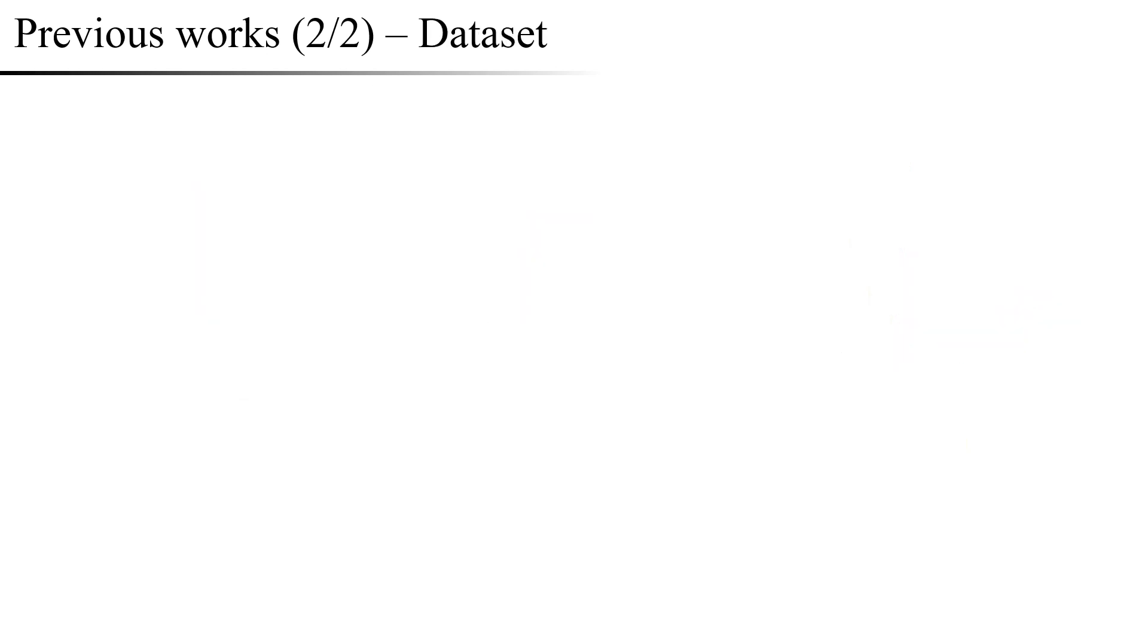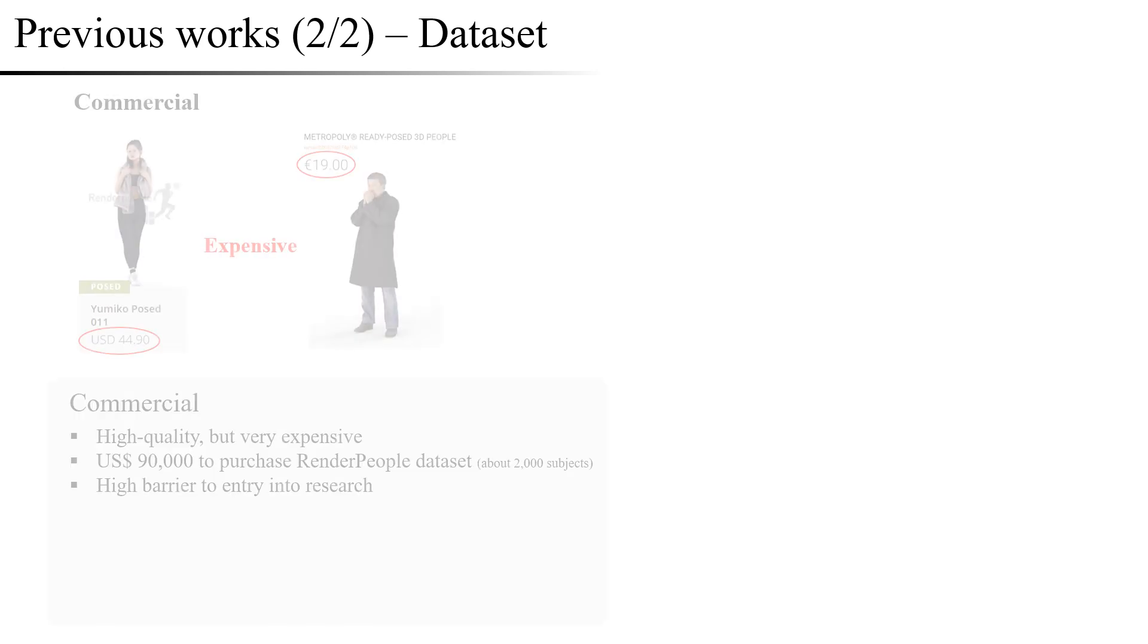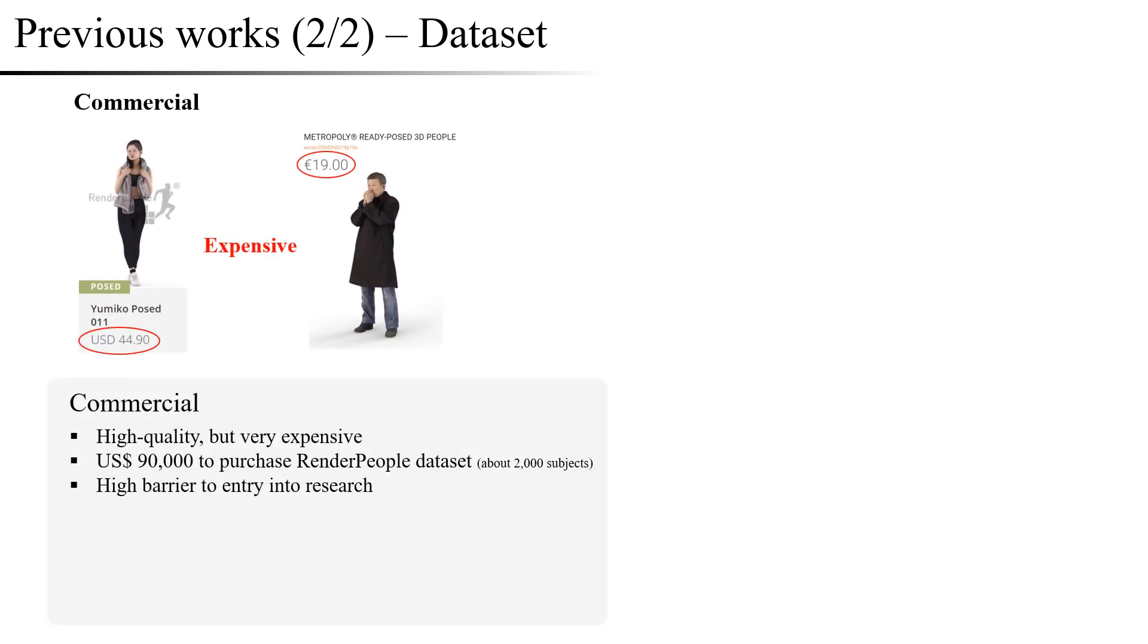Furthermore, there are also issues with the training dataset. First, commercial datasets have high quality, but the price per object is expensive. The Render People dataset on the left-hand side requires approximately $90,000 to purchase 2,000 objects.